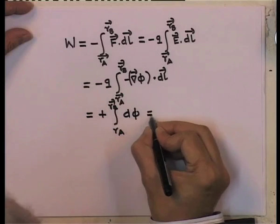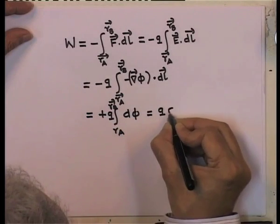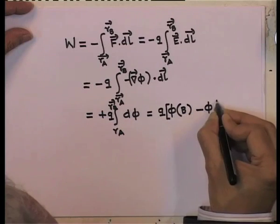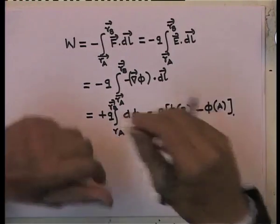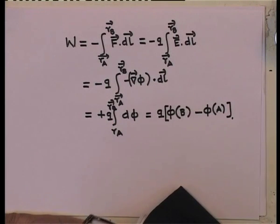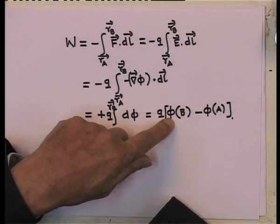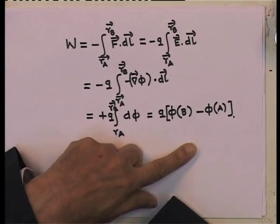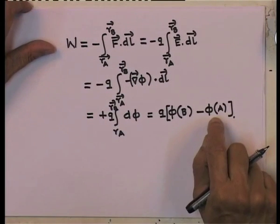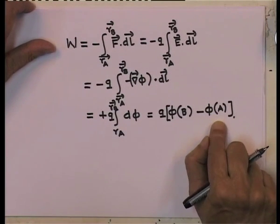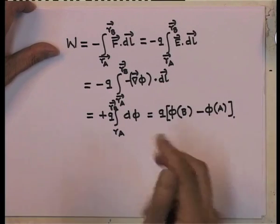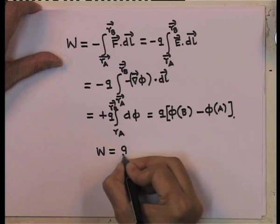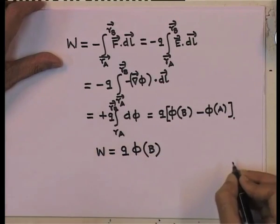We have seen that in terms of the potential, the electric field is the negative gradient. So it is minus grad phi dot dl, and when we discussed the meaning of the gradient, we saw that this quantity is nothing but the differential d phi. So therefore what I have, with a q there, is q times phi at the point b minus phi at the point a. With respect to some reference point, the potential of point b is phi_b minus phi_a. I could choose the reference point a to be the point where the potential is 0, in which case the work done is simply equal to q times the potential of point b.